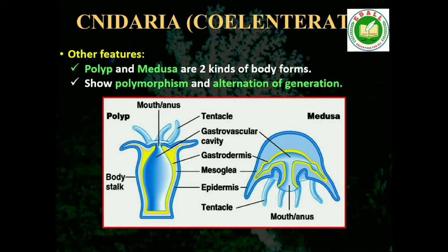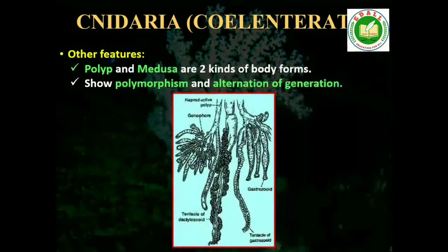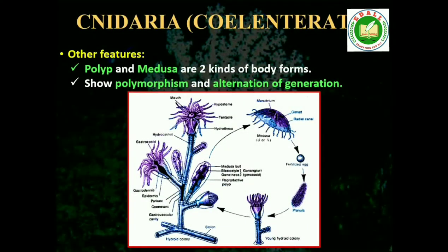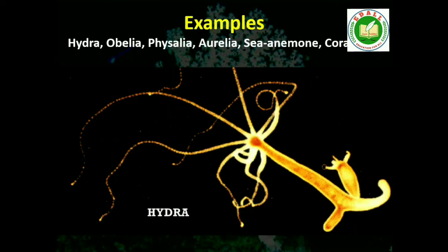Cnidarians exhibit two basic body forms called polyp and medusa. The former is a sessile and cylindrical form like Hydra, Adamsia, etc., whereas the latter is umbrella-shaped and free-swimming like Aurelia or jellyfish. Those cnidarians which exist in both forms exhibit alternation of generation, metagenesis, i.e., polyps produce medusae asexually and medusae form the polyps sexually, for example, Obelia.